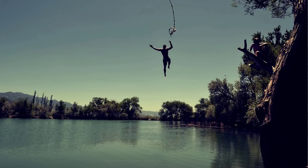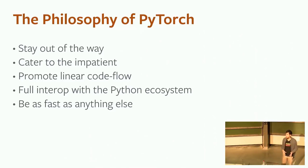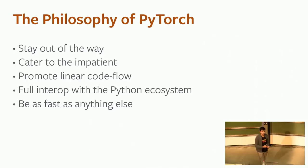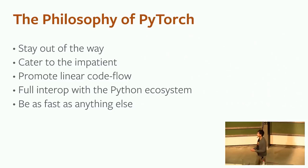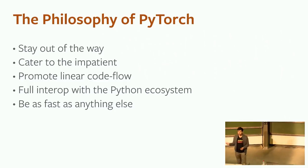One of the top philosophies of PyTorch is to stay out of the way, so we can focus more on neural networks and less on the framework. PyTorch aims to avoid overburdening users with abstractions or complicated API procedures, to cater to the impatient by keeping things always interactive and quick with no compilation time, to promote a linear and interactive code flow, and to interoperate with the Python ecosystem as naturally as possible.